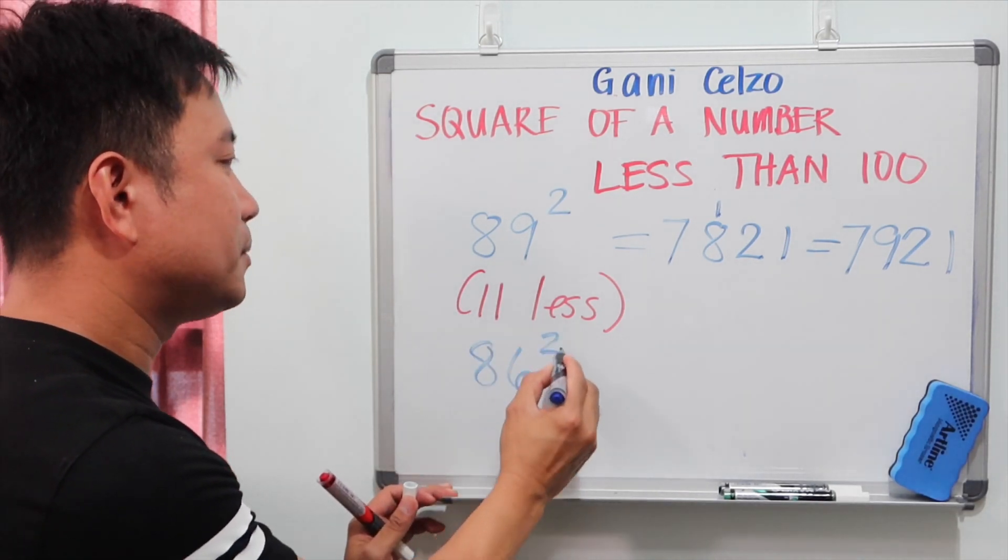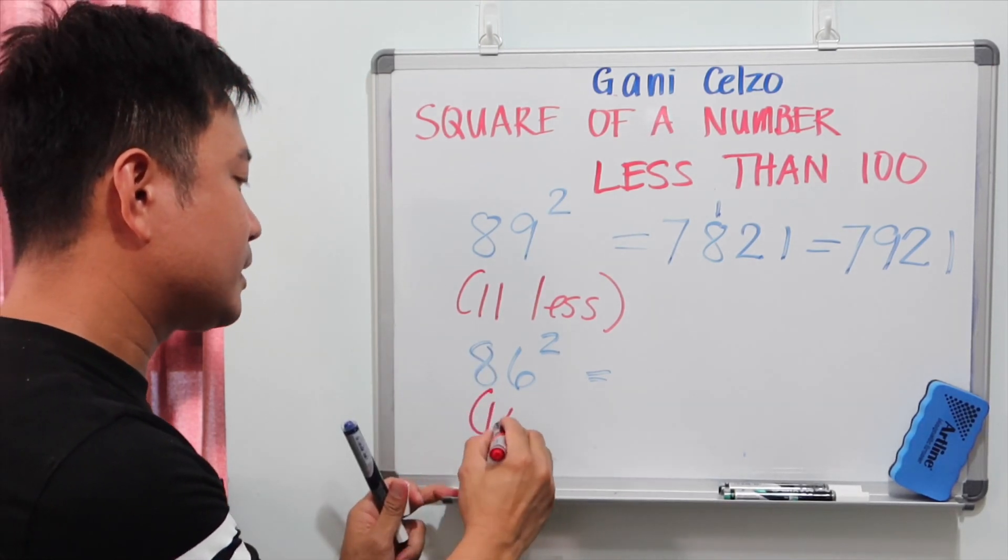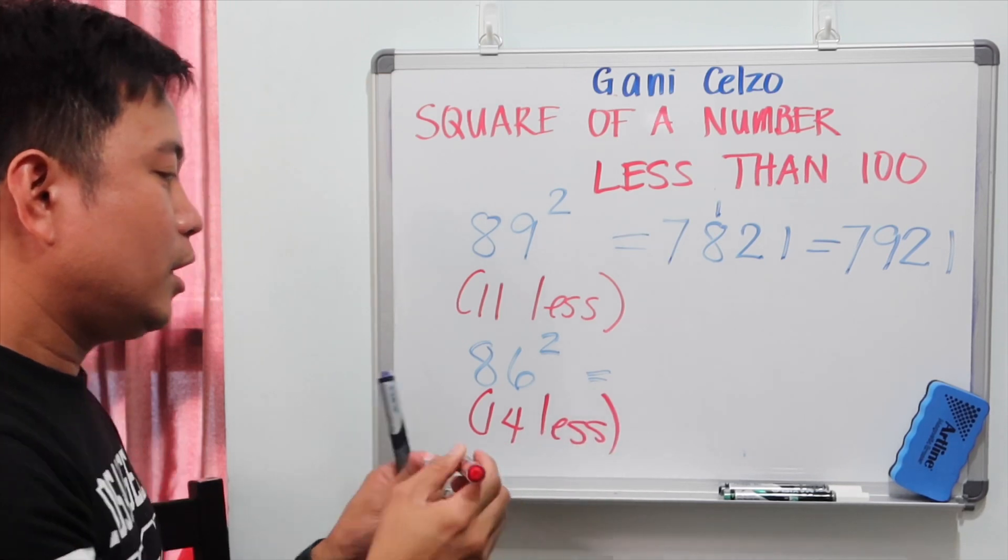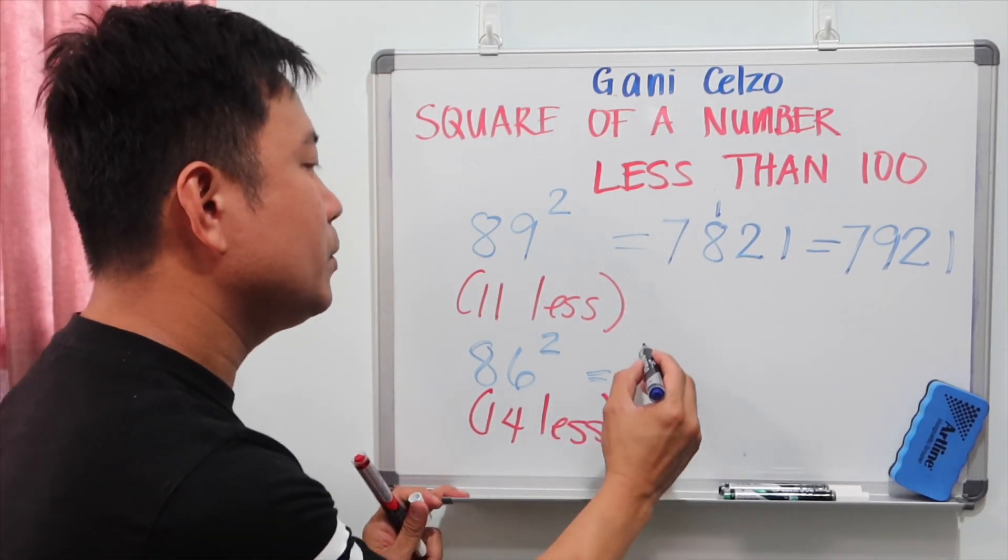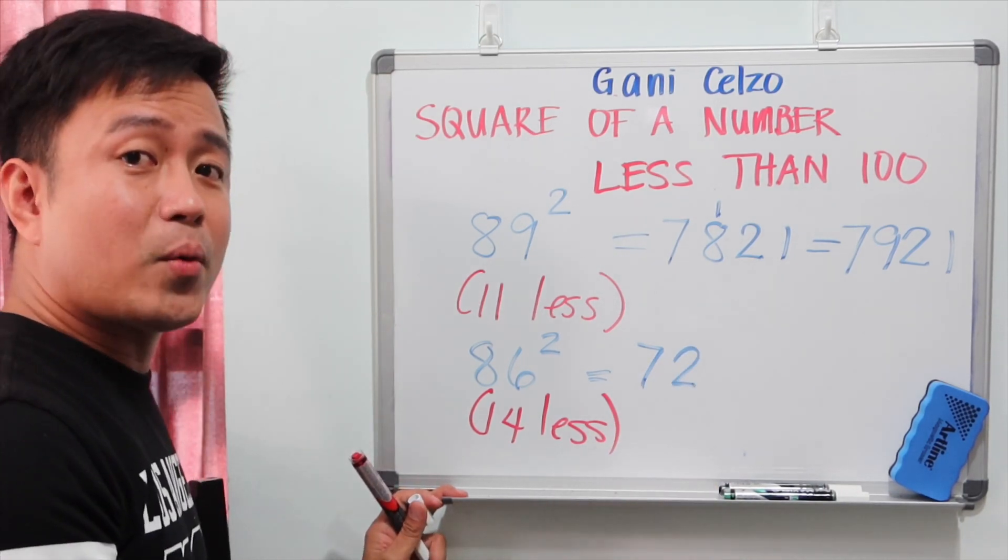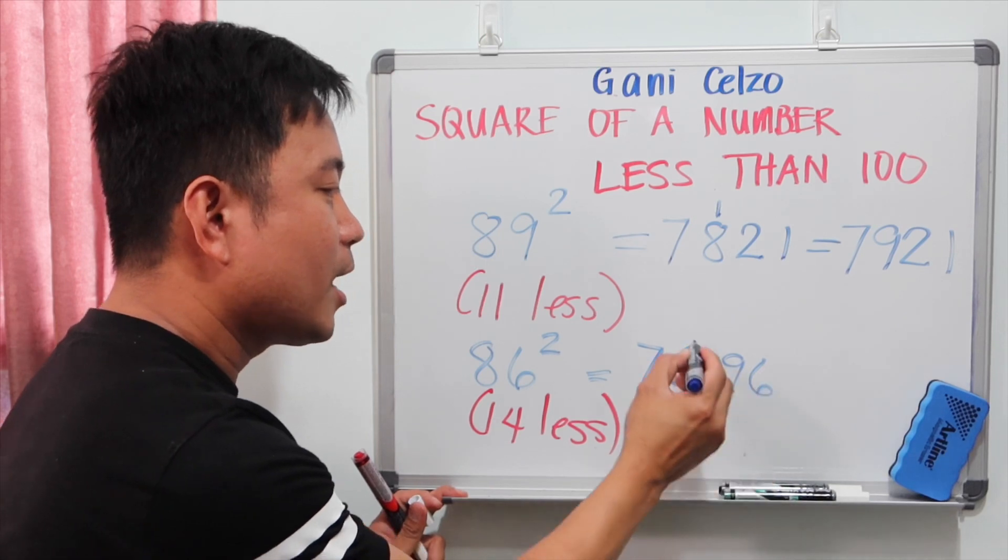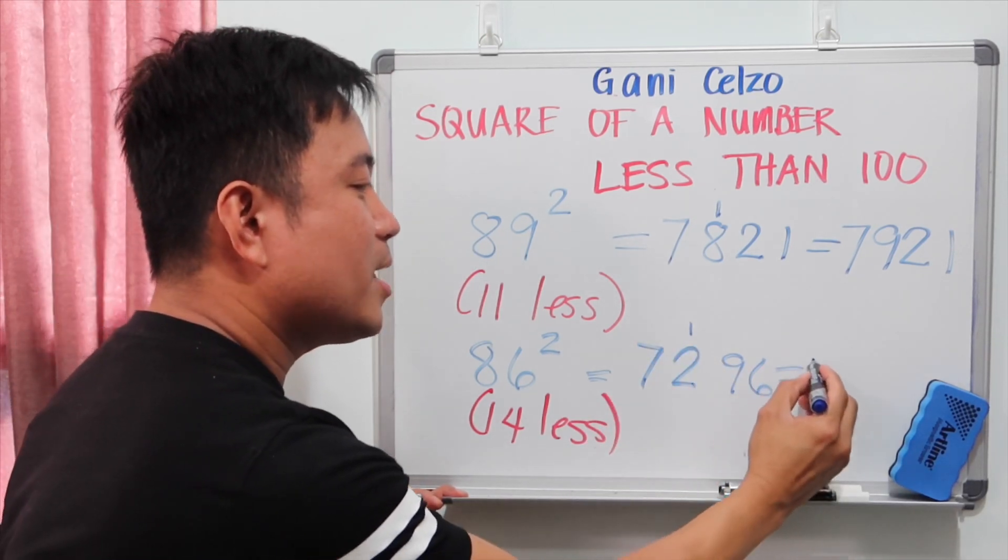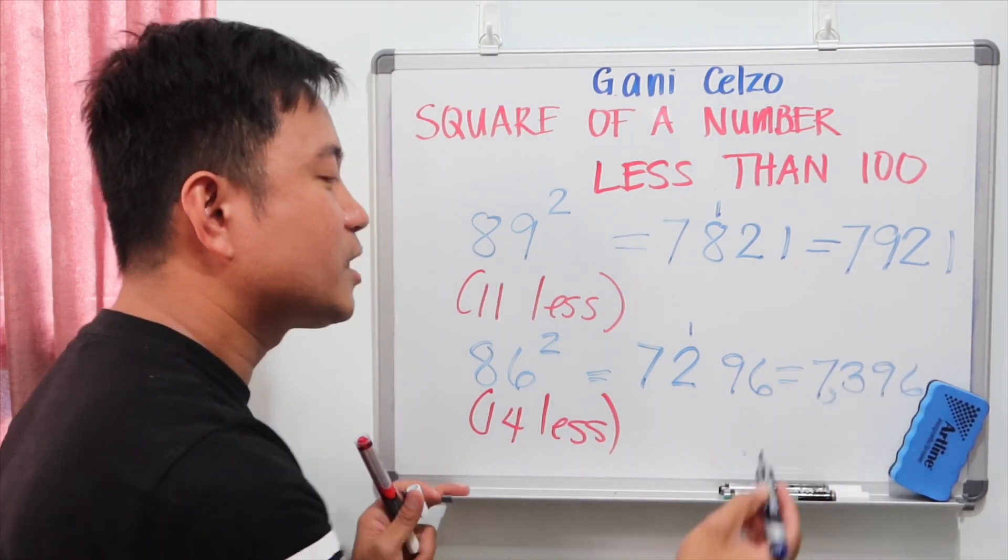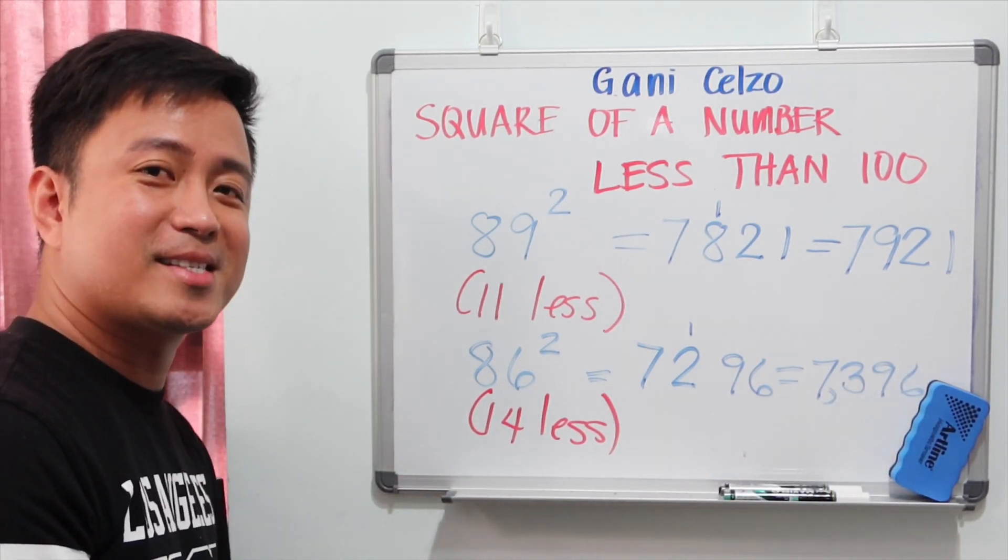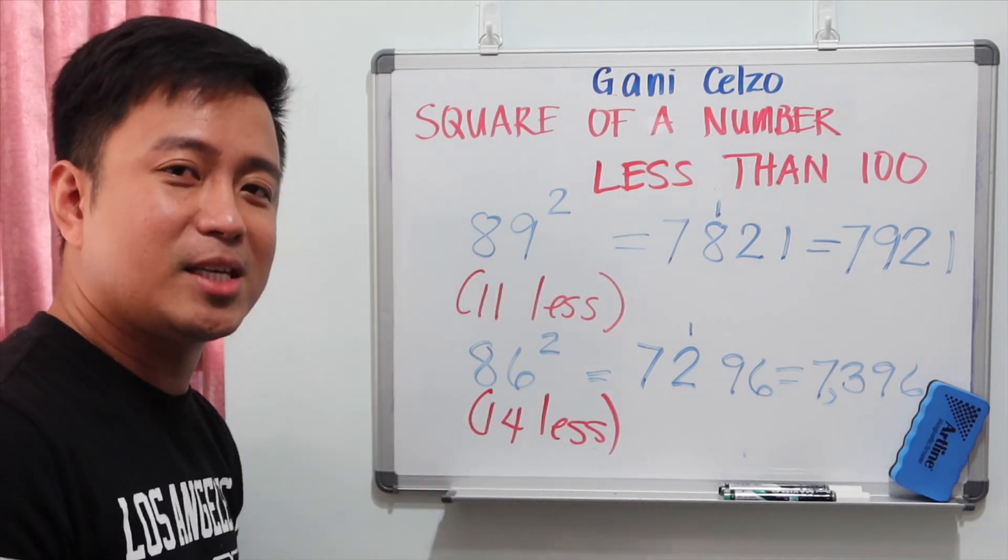86 square. 86 square is 14 less than 100. If you subtract 86 and 14, that's 72. 14 square is 196, so I put 96 here. And add 1 to 72. That makes the answer 73, 96. So 7,396. There we go. You can solve square of numbers in less than 5 seconds.